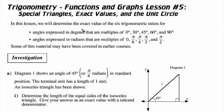In this lesson, we'll determine the exact value of the six trig ratios for angles in degrees that are multiples of 0, 30, 45, 60, and 90 degrees. And of course, angles expressed in radians that are multiples of pi over 6, 0, pi over 4, pi over 3, and pi over 2. You'll notice there's some equivalency here.